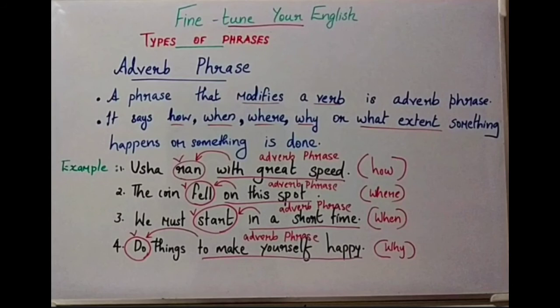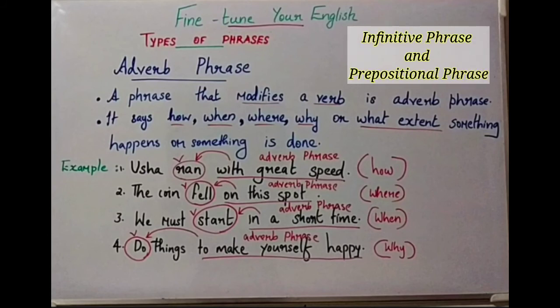We can discuss one more point about Adverb Phrase. An infinitive phrase or a prepositional phrase can also be an Adverb Phrase. With that, we can identify this point: 'with great speed' is a prepositional phrase; 'on the spot' is again a prepositional phrase; 'in a short time' is one more prepositional phrase. So, a prepositional phrase can be an Adverb Phrase. Then the last one: 'to make yourself happy' is an Adverb Phrase, and at the same time it is an infinitive phrase too, because it starts with 'to' infinitive.